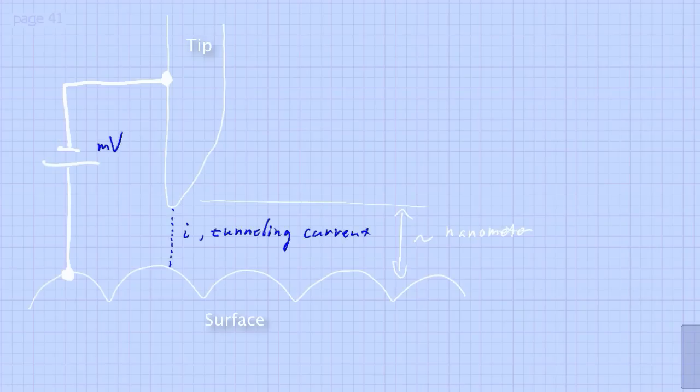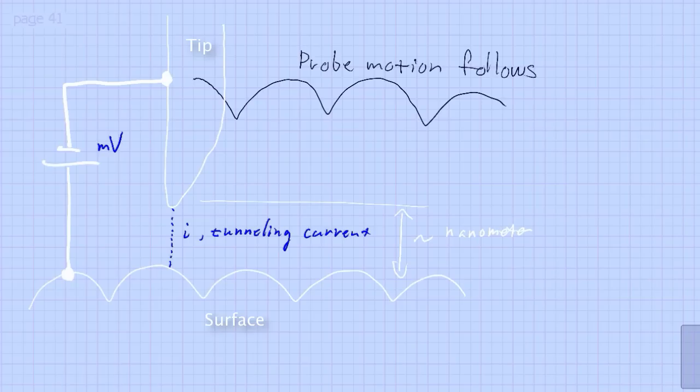By measuring this current you will have a very accurate way to keep the distance at a fixed level when you scan. That means that the tip that scans across the surface will take the same trajectory as the topography of the surface. That in turn means that you sort of map off the surface and can resolve its features.